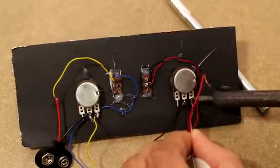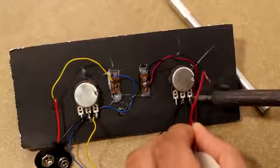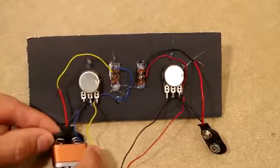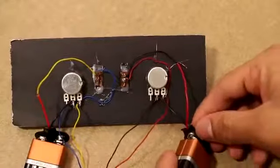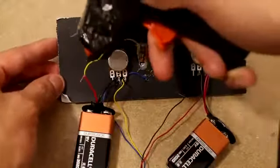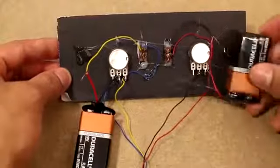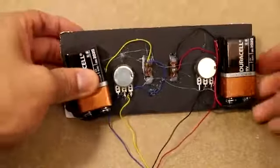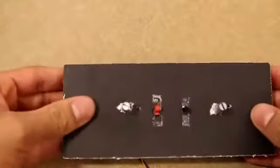After soldering these connections to make them permanent we can now attach the batteries to our remote. Once the batteries are attached we'll just glue them to the bottom side of our remote. And then after that we can test.